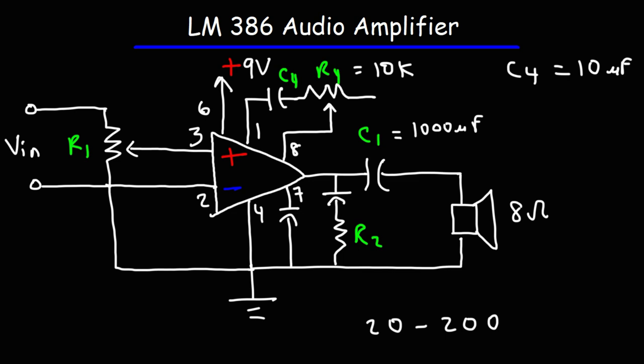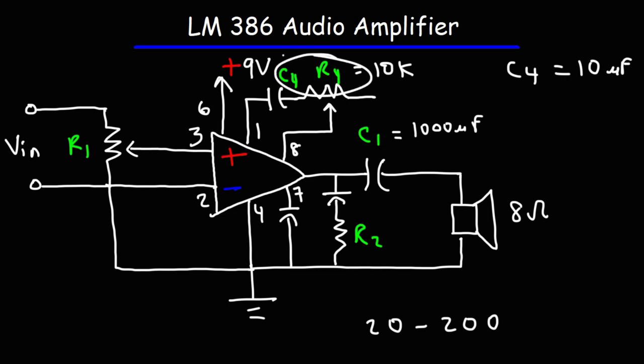So that's basically it for this circuit. R1 is used for volume control, you know how to use the capacitors to adjust the bass, and you can use C4 and R4 to adjust the gain of the audio amplifier. For those of you who want more videos on electronics and circuits, feel free to check the links in the description section below. Thanks again for watching, and we'll see you next time.